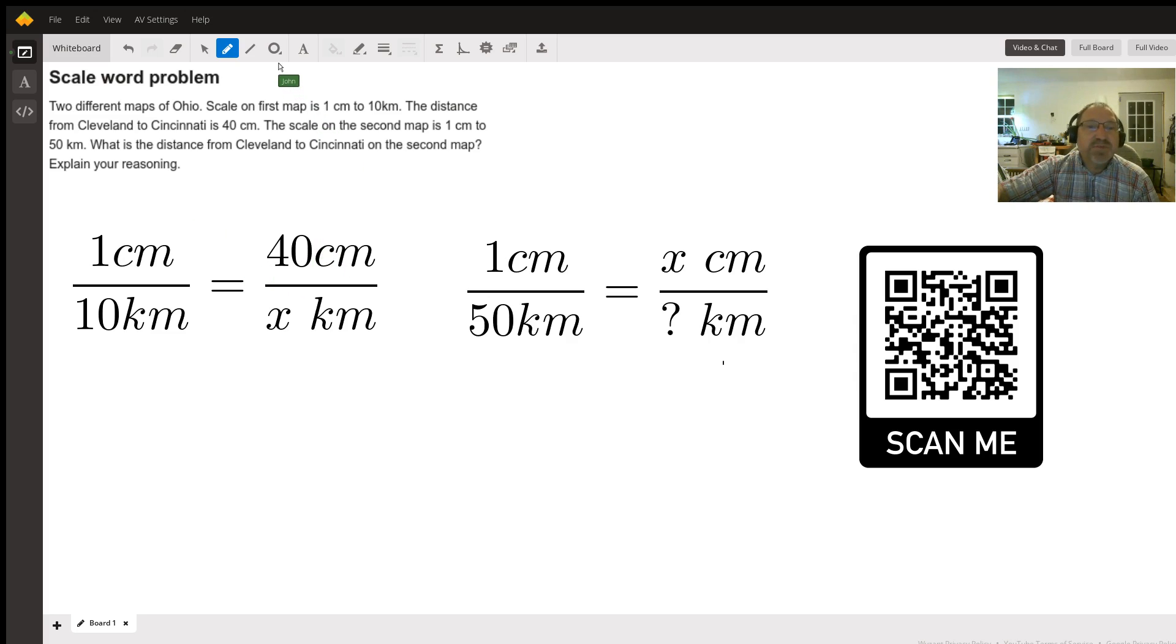We know that the distance on the first map is 40 centimeters, so we're going to simply cross-multiply and then simplify. Let me indicate here that we're going to multiply these two and then multiply these two and set them equal to each other. Let's get started: 10 times 40 is 400, and 1 times x is 1x. If we set these equal to each other, 1x equals 400.